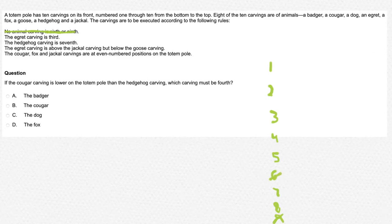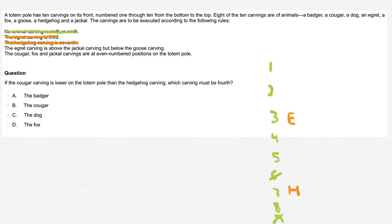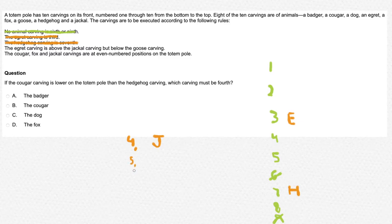The egret carving is 3rd, so let's write E in the 3rd position. The hedgehog carving is 7th, so write H at position 7. The egret carving is above the jackal carving but below the goose carving — the egret would be a space above the jackal carving. That leaves only positions 4, 5, and 8 for the jackal carving. The cougar, fox, and jackal carvings are at even-numbered positions on the totem pole.